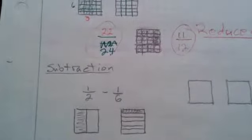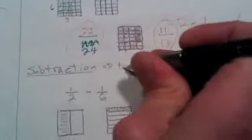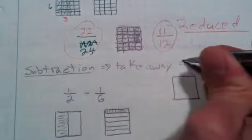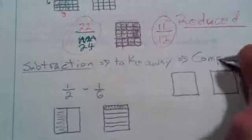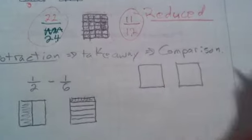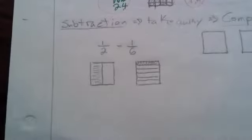And then subtraction, I've got a couple options as to what that means. I could either use that subtraction means takeaway, or I could use the comparison model. And I find that working with fractions, I end up using the comparison model more often than takeaway, but takeaway works just fine, too.